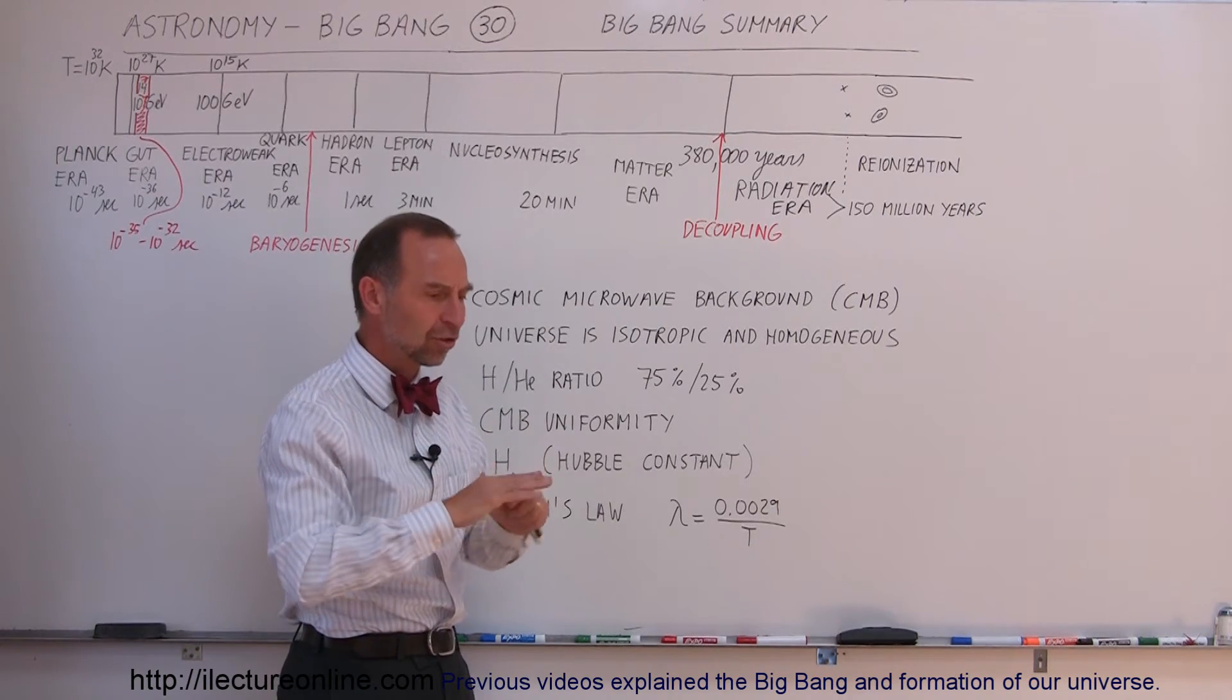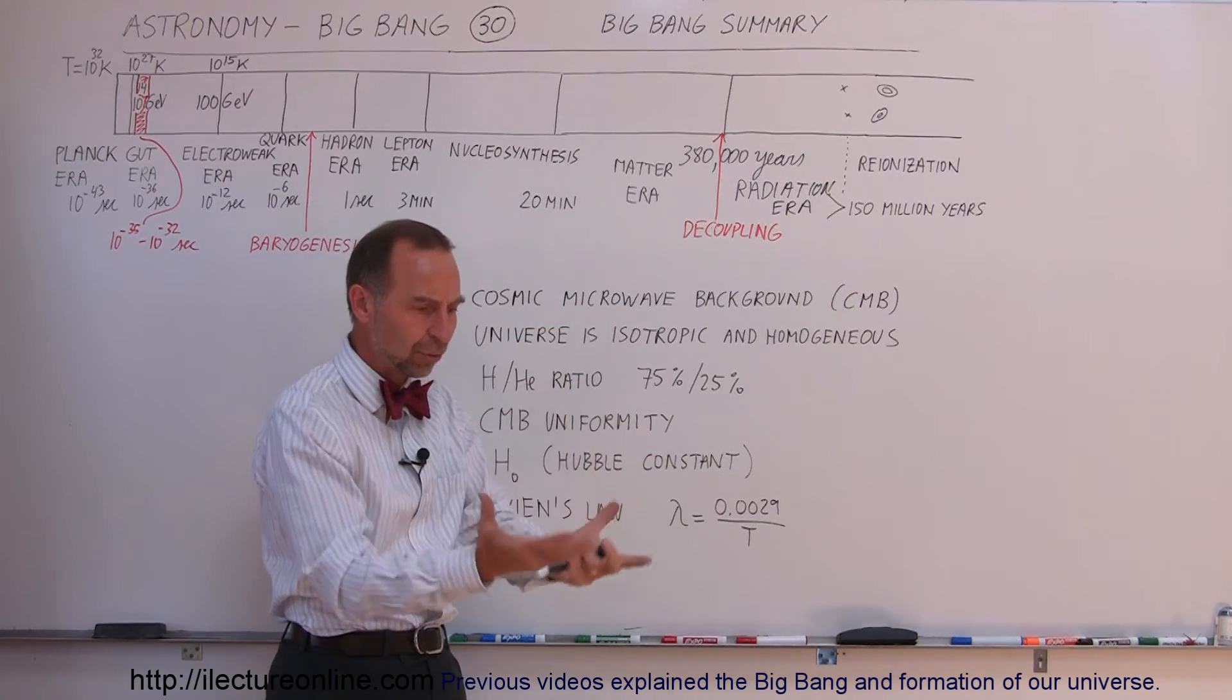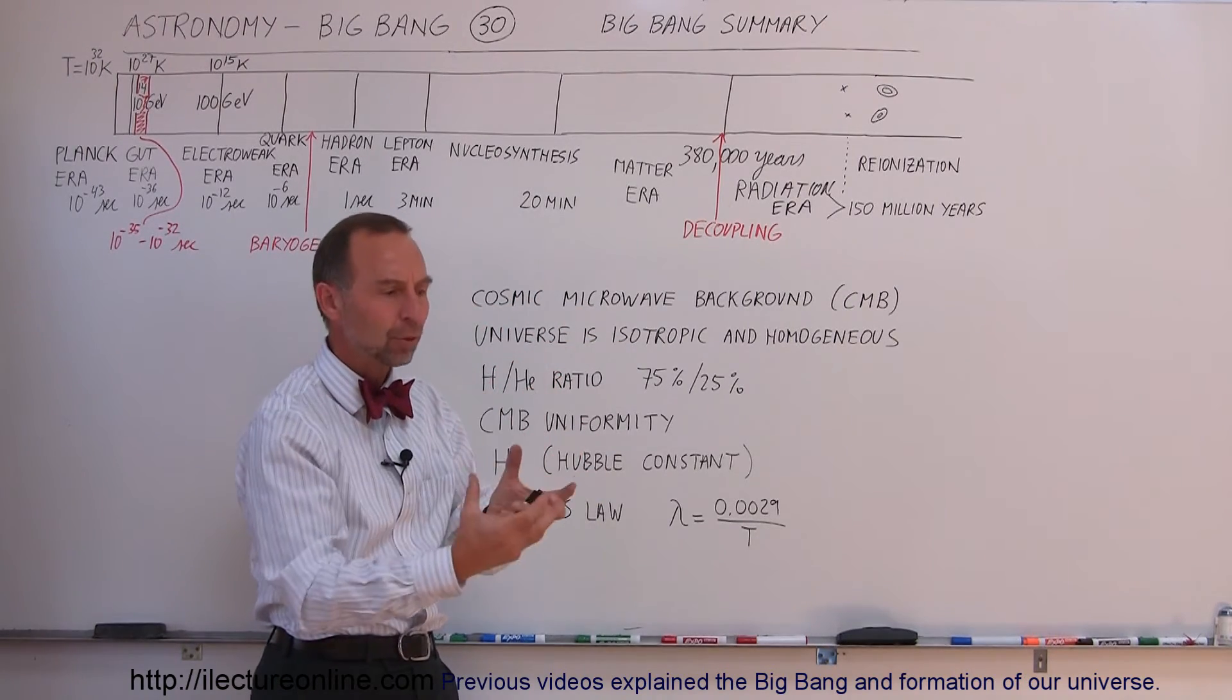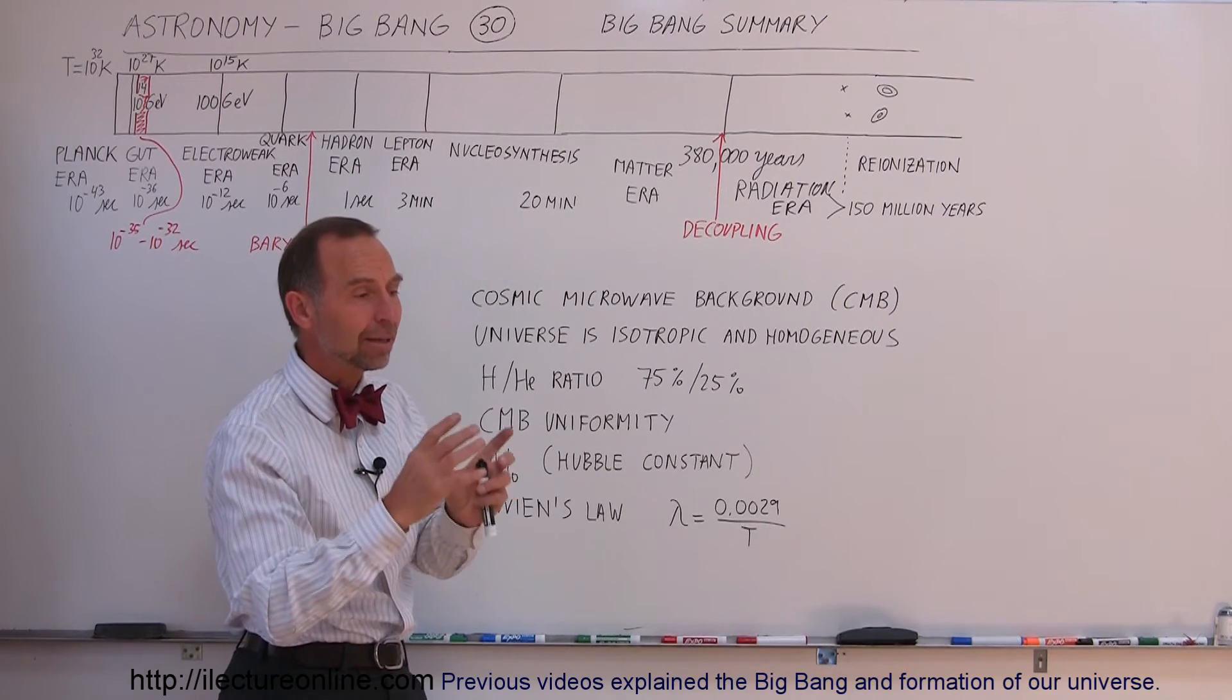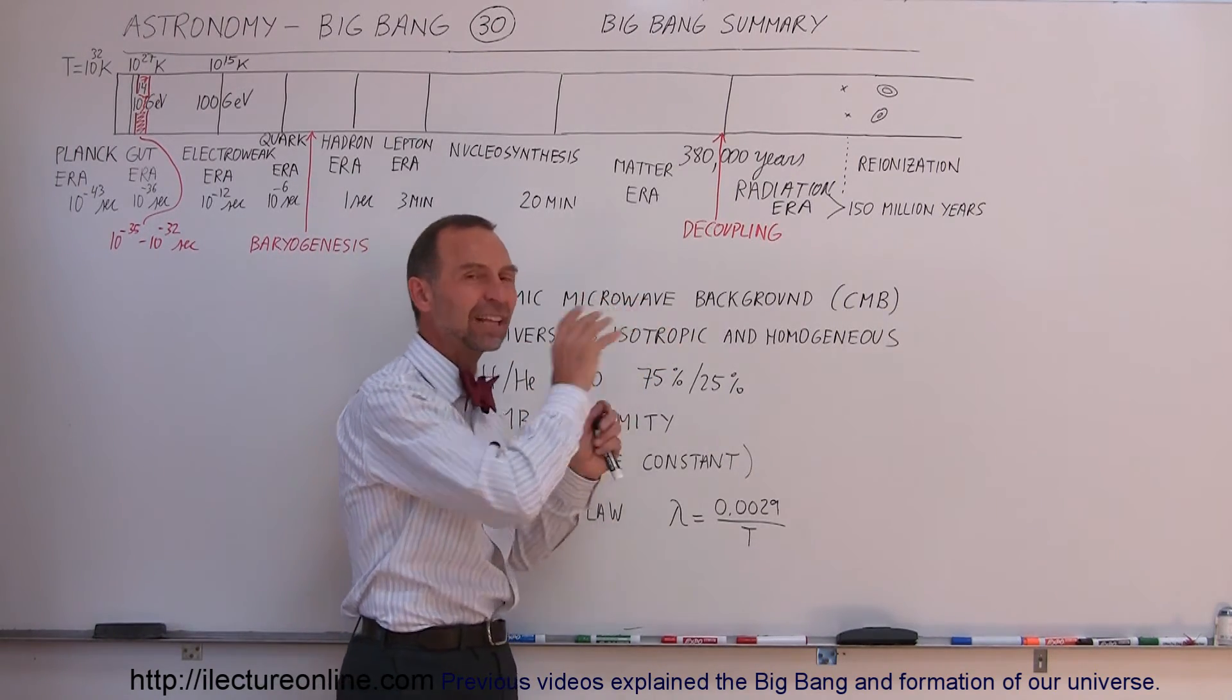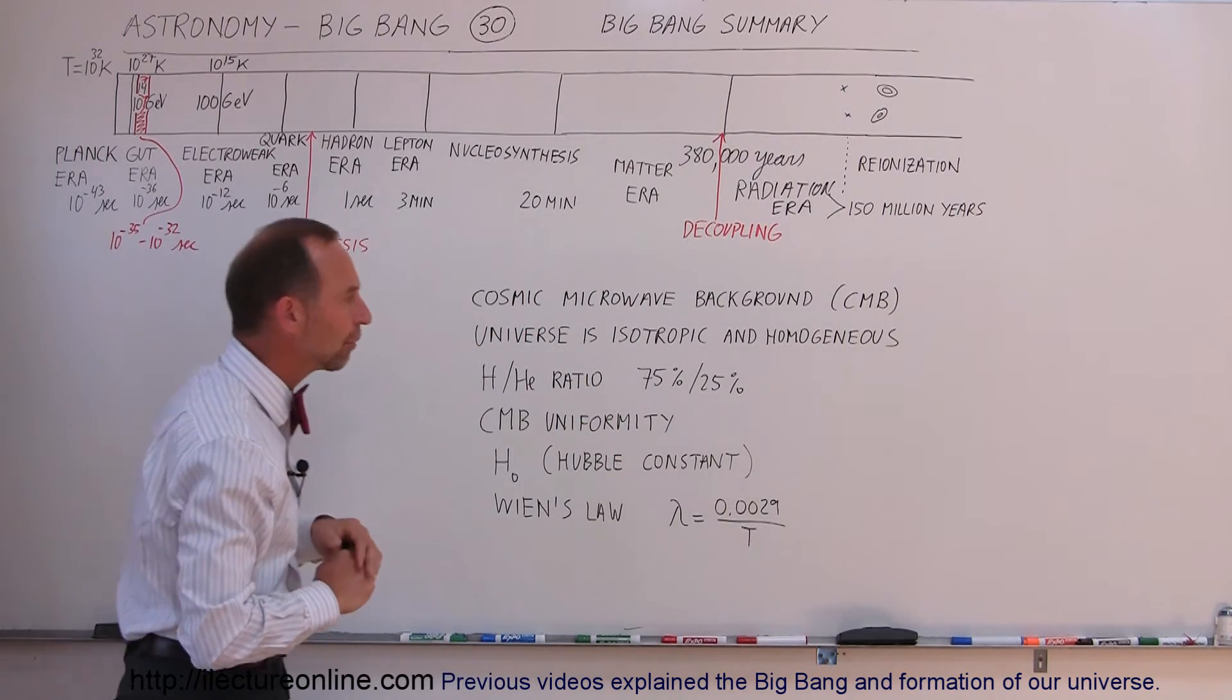The Universe now is structured in such a way that it has these sheets of regions where galaxies exist, with huge voids between them where galaxies do not exist. And that is partly because of the way the energy density fluctuations existed at the very early stages of the Universe.